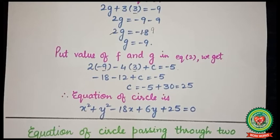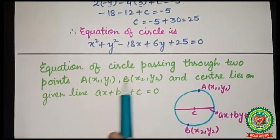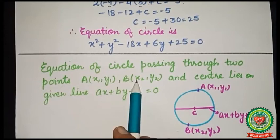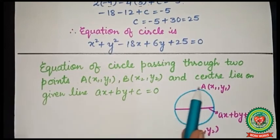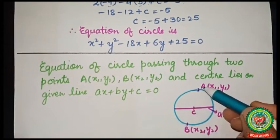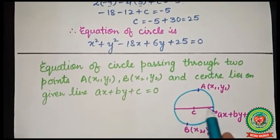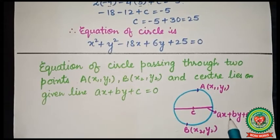Now let's discuss the sixth objective: finding the equation of a circle passing through two points whose center lies on a given line. Geometrically, the circle passes through two points and the center lies on a line — meaning the diameter equation is given. Let's try one question based on this type.